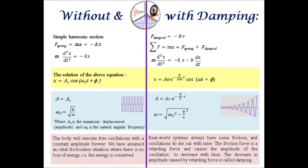An additional force due to friction is included: F equals minus bv, where v is the velocity of the oscillating body and b is the constant that describes the strength of the damping force.